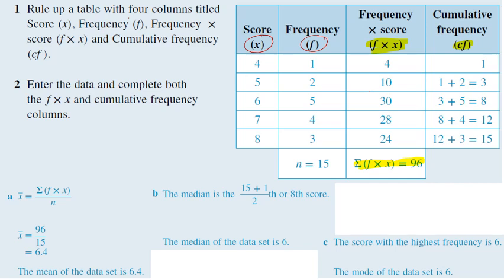We need that for when we calculate our mean, because the top of that equation is our sum of f times x. Then all we need to do is divide that by our n, which we have up here. So 96 divided by 15, 6.4. So that's our mean.